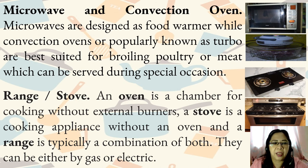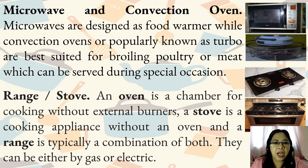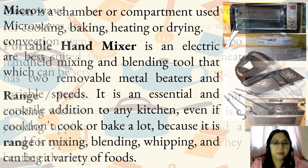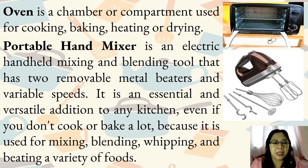Microwaves are designed as food warmers, while convection ovens, popularly known as turbo, are best suited for broiling poultry or meat which can be served during special occasions. An oven is a chamber for cooking without external burners. A stove is a cooking appliance without an oven, and a range is typically a combination of both. They can be either gas or electric. An oven is a chamber or compartment used for cooking, baking, heating, or drying.